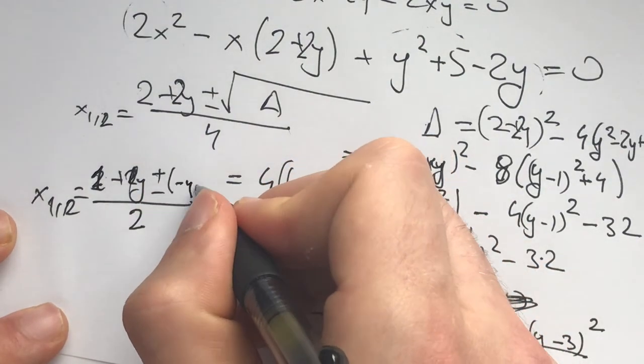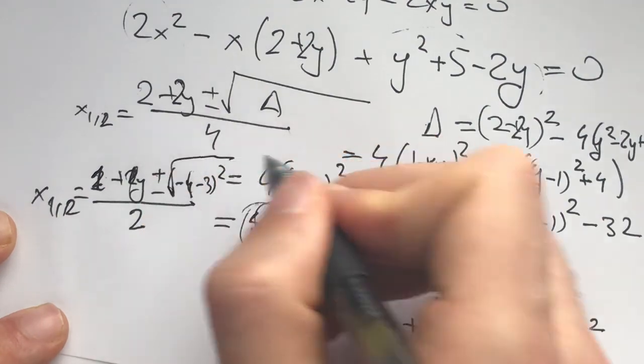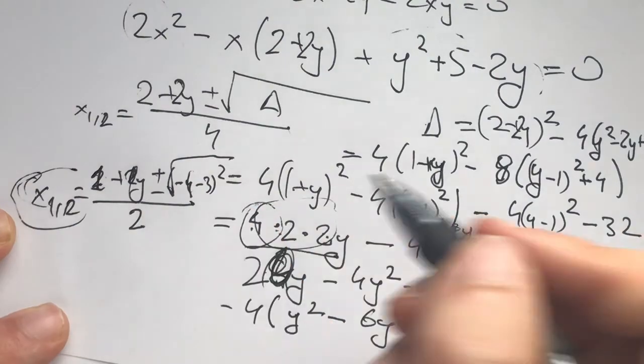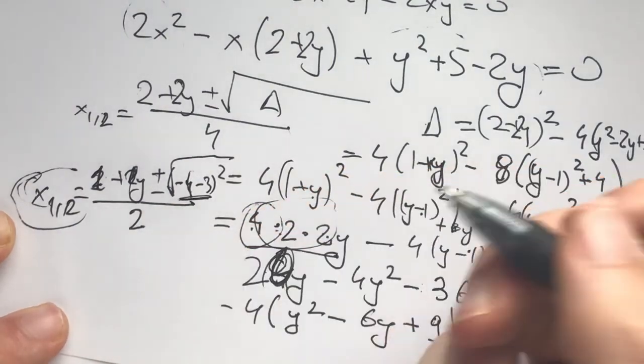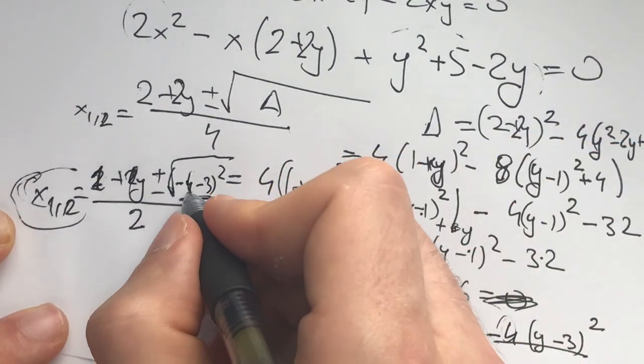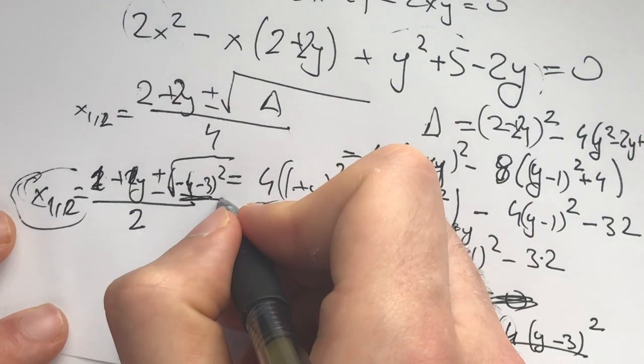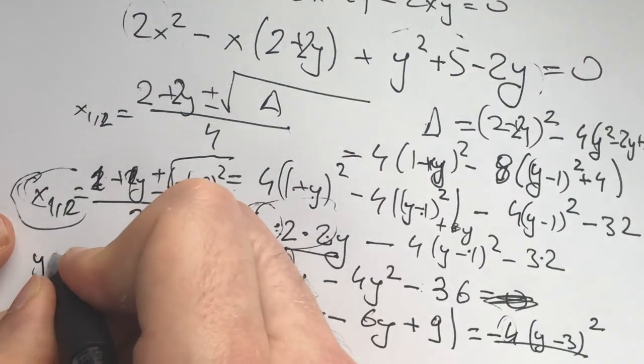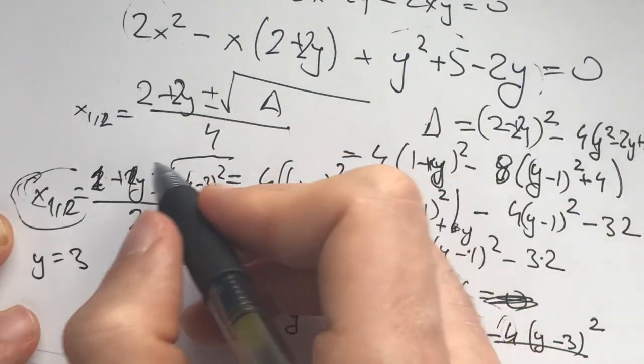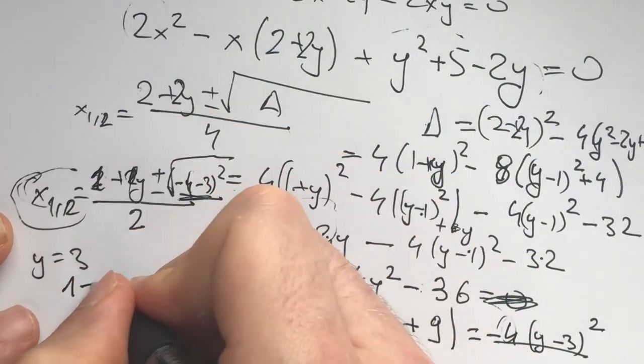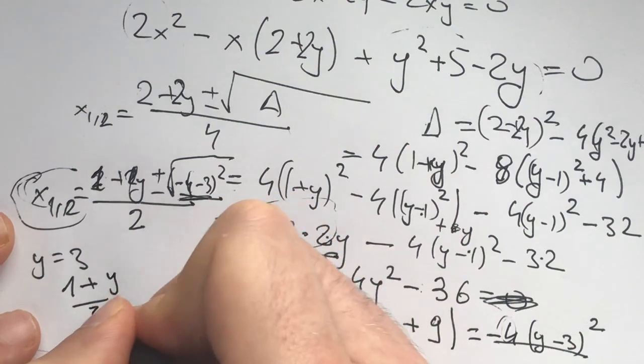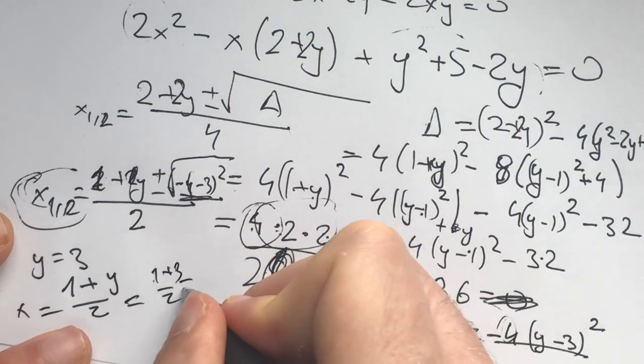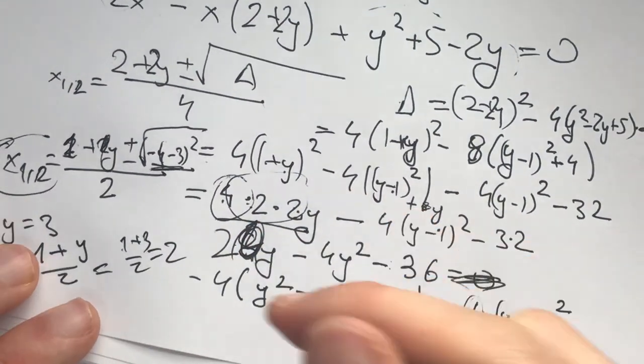Negative (y minus 3) squared, the square root of this. The only time this is a real number is if the discriminant is greater than or equal to 0, which means this must be greater than or equal to 0. But because this is always less than or equal to 0, the only solution we have is when y equals 3. And from there we get x is (1 plus y) over 2, i.e. x equals (1 plus 3) over 2 equals 2. That's our only solution.